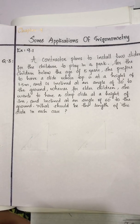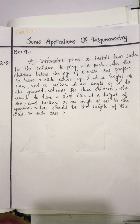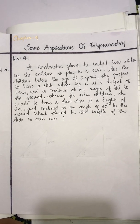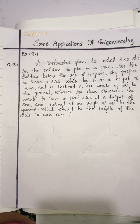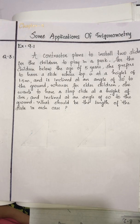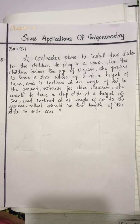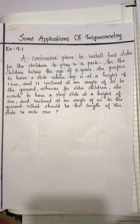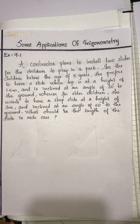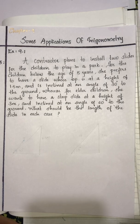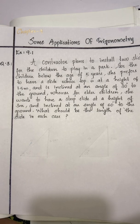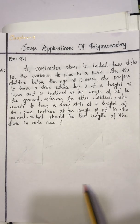Hi students, today we are going to discuss question number 3 from exercise 9.1. The question is: a contractor plans to install two slides for children to play in a park. For children below the age of five years, she prefers a slide whose top is at a height of 1.5 meter and is inclined at an angle of 30 degrees to the ground, whereas for elder children she wants a steep slide at a height of 3 meter and inclined at an angle of 60 degrees to the ground.